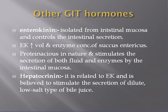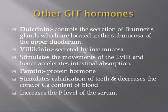Hepatocrinine is related to enterokinin and is believed to stimulate the secretion of a dilute, low-salt type of bile juice. Other gastrointestinal hormones include duocrinine, which controls the secretions of Brunner's glands located in the submucosa of the upper duodenum. Villikinin is secreted by the intestinal mucosa and stimulates movements of the intestinal villi, enhancing and accelerating intestinal absorption. Proteokinin is a protein hormone that stimulates calcification of the teeth and decreases the concentration of calcium in the blood, and increases protein levels in the serum.